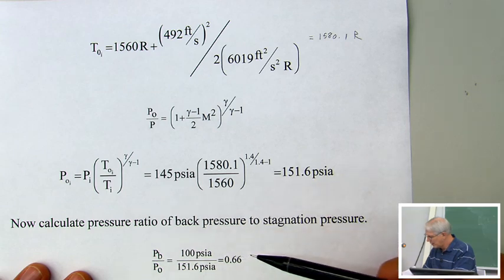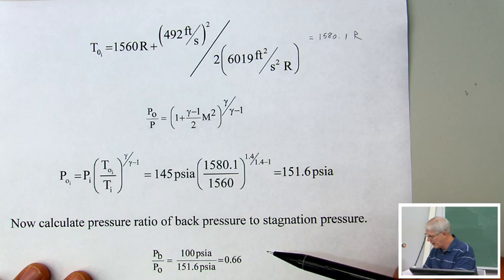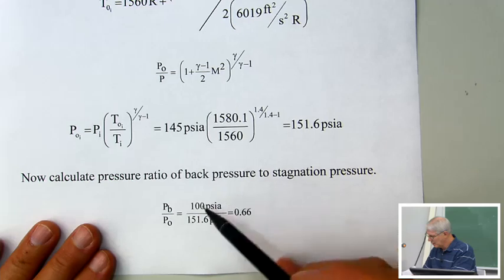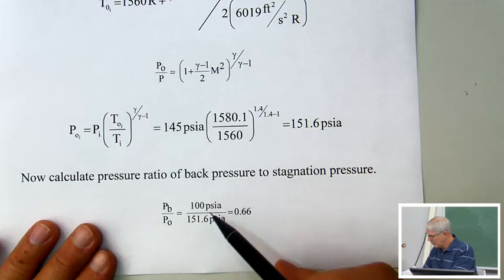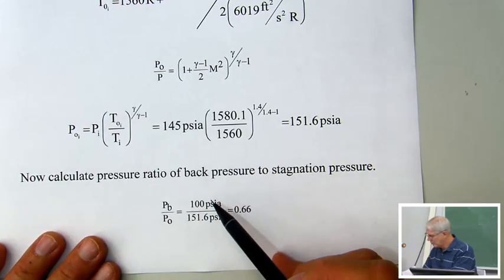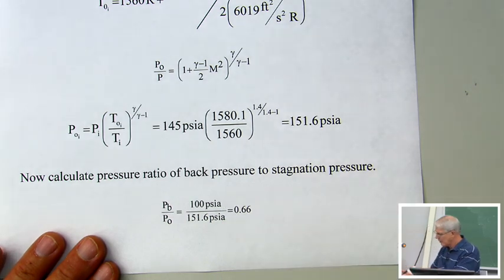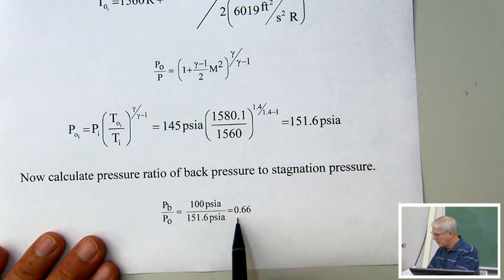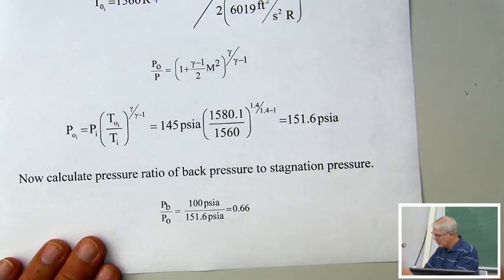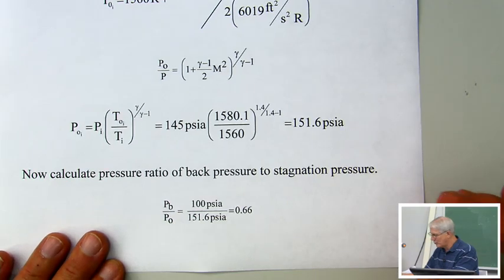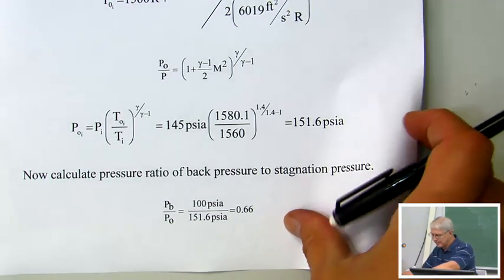Now we can calculate the ratio of the back pressure to the stagnation pressure. For part A, the back pressure is 100 PSI, so the pressure ratio is 100 divided by 151.6, which equals 0.66. That is greater than the critical pressure ratio of 0.5283, so the flow is not choked.